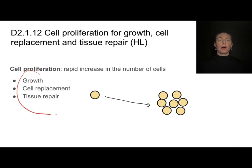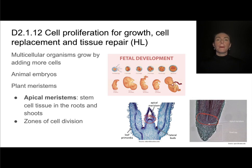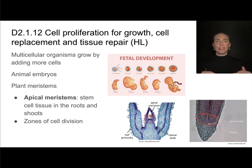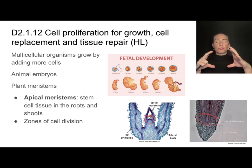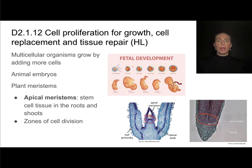There are a few reasons why cell proliferation might take place, one of which being growth. Multicellular organisms like you and I grow larger by adding more cells. It's important to understand that our cells don't just grow in size — we add on more cells. That's very easily seen in this animal embryo, where we start out as one cell, that zygote, that fertilized egg, and we grow by adding and adding cells via mitosis.